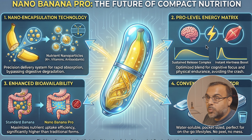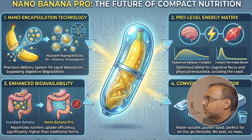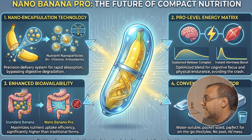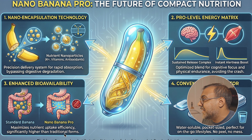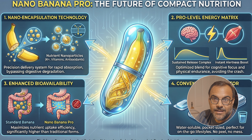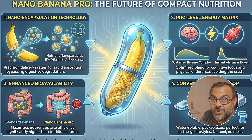Everything in this block is contextual to item one from the banana capsule. Then we jump over to the pro-level energy matrix with a release complex, alertness boost, and an optimized blend for cognitive focus and physical endurance, avoiding the crash. We go back to the digestive component, and finally it covers a convenience form factor — water-soluble, pocket-sized, perfect for on-the-go lifestyles, no peel, no mess. It even understands this is a banana product. There's even a disclaimer: 'Conceptual product illustration, not a real medical or dietary product based on futuristic nanonutrition concepts.' It was intelligent enough to add a disclaimer. This is mind-blowing.